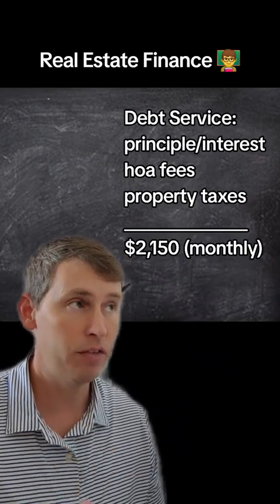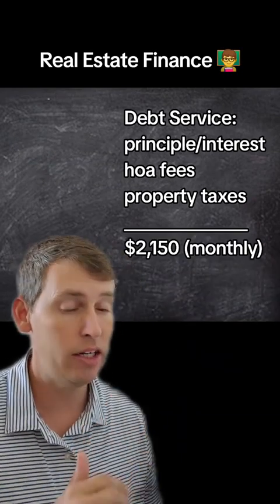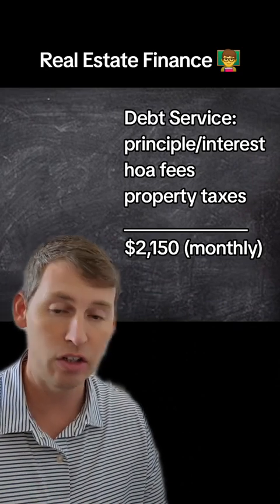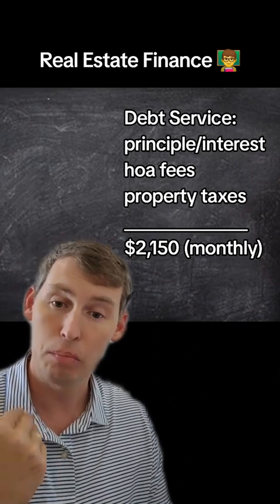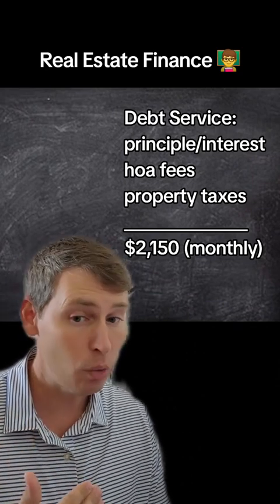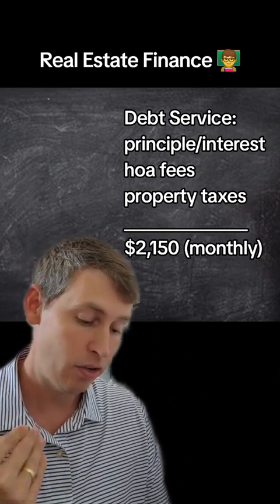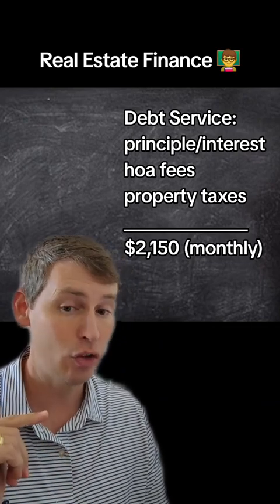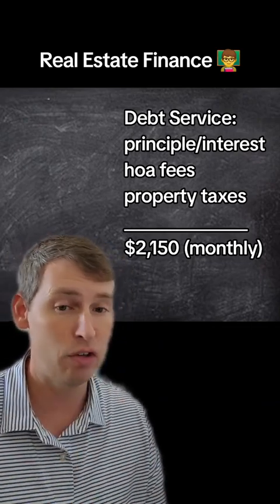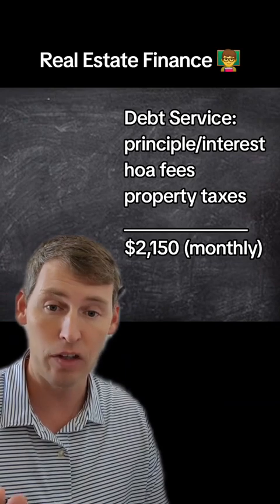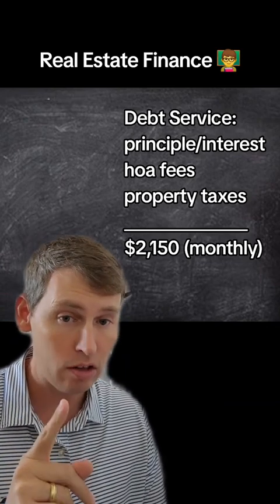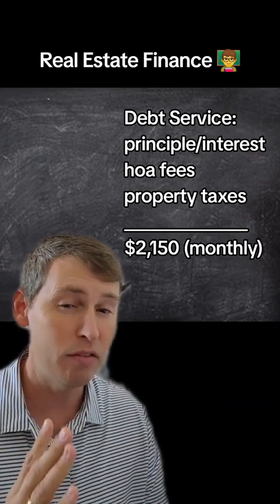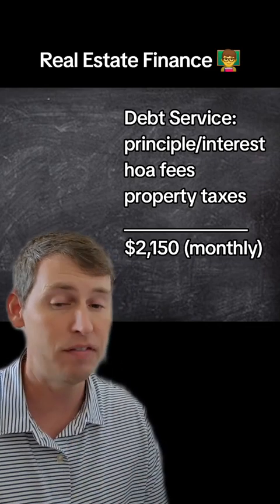Now let's talk about the debt service without getting deep in the weeds about interest rates. Your debt service includes your principal and interest, your HOA, your property taxes, as well as your insurance. Let's say your total debt service out the door for expenses on this loan to acquire this property is $2,150 a month.